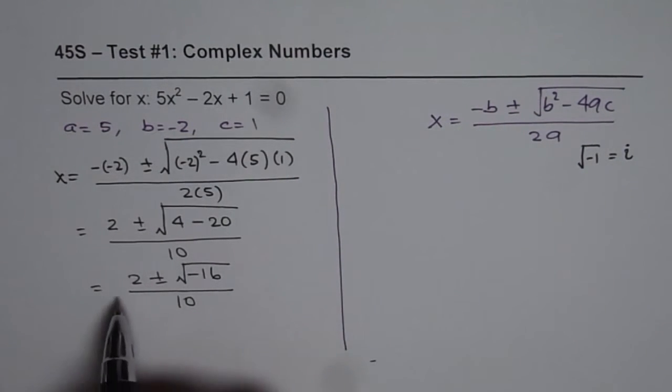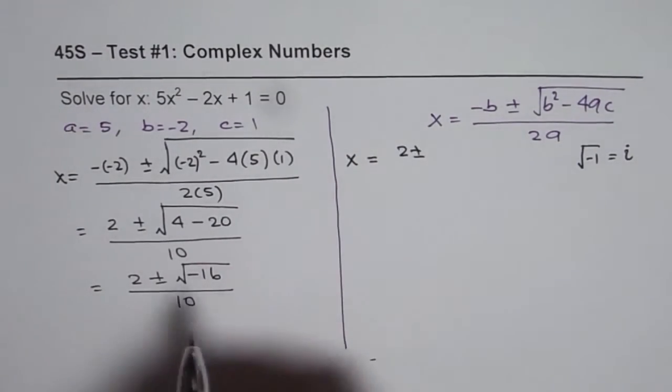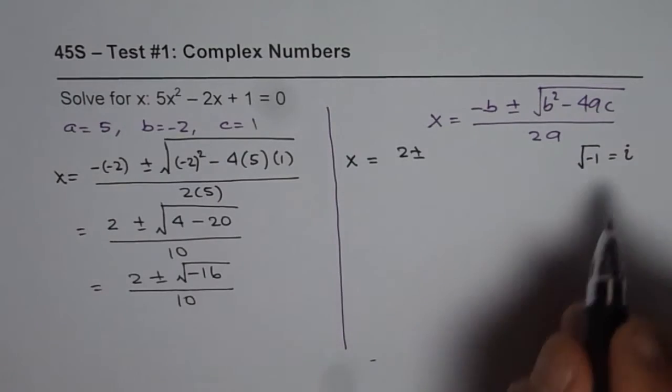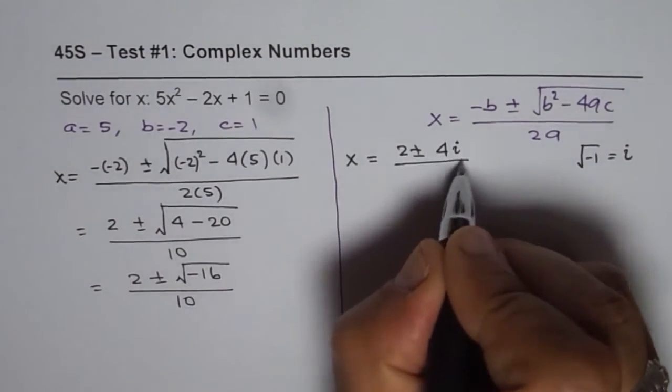So we will use this, and then write down this solution as x = 2 ± √(-1) × √16. So minus square root is i, and square root of 16 is 4. So we get 4i divided by 10.